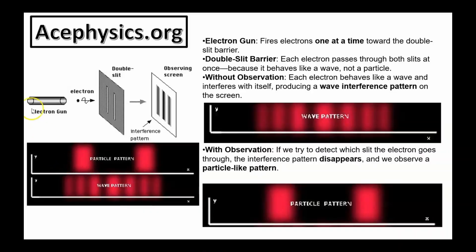The double slit experiment consists of an electron gun, a double slit, and an observing screen. The electron gun fires electrons one at a time towards the double slit barrier. Each electron passes through both slits simultaneously because it behaves like a wave, not a particle. Without observation, each electron behaves like a wave and interferes with itself, producing a wave interference pattern on the screen. This is the wave interference pattern.